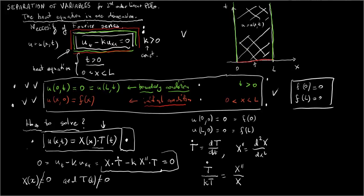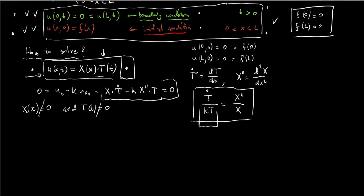If this is a solution, then T and X must satisfy this relation. Note that the left-hand side consists of constant k and function T and its time derivative, so the left-hand side depends only on variable t. The right-hand side is a function of x only. So how can a function of t only equal a function of x only?